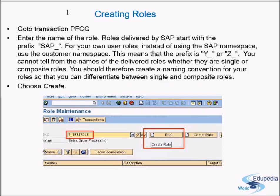In PFCG, you enter whatever role name you want to create. We have already discussed the naming convention of roles in the last video. Roles delivered by SAP start with SAP underscore, so don't create any role starting with SAP underscore for your own user roles. Instead, use the customer namespace.